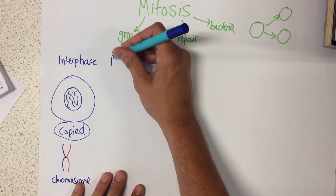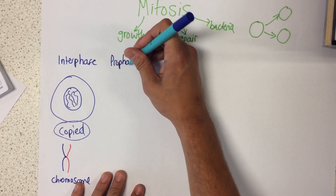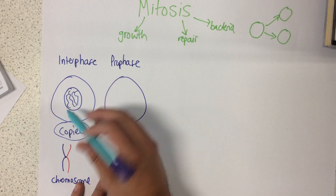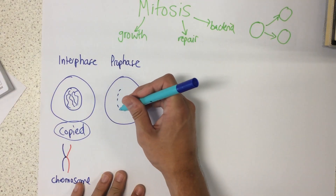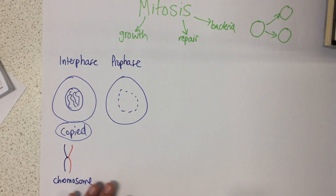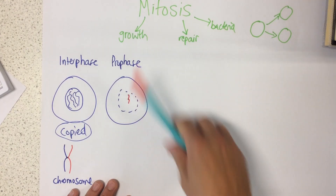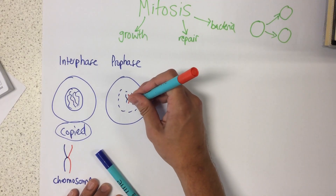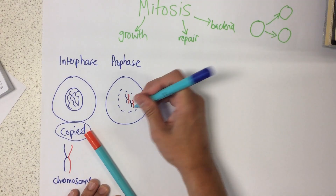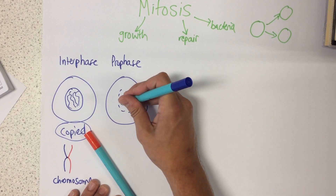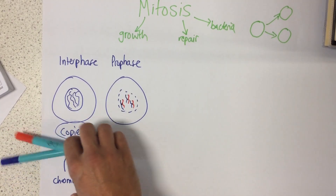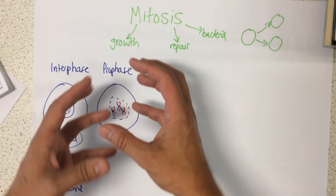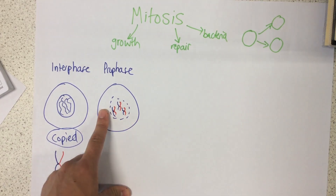Next up we have prophase. During prophase, the nuclear membrane — the little membrane around the nucleus — starts to break down, and these chromosomes get shorter and fatter. In a human, you'd have 23 pairs of these chromosomes. Now the nucleus is broken down, so these chromosomes are just free within the cytoplasm of this cell.